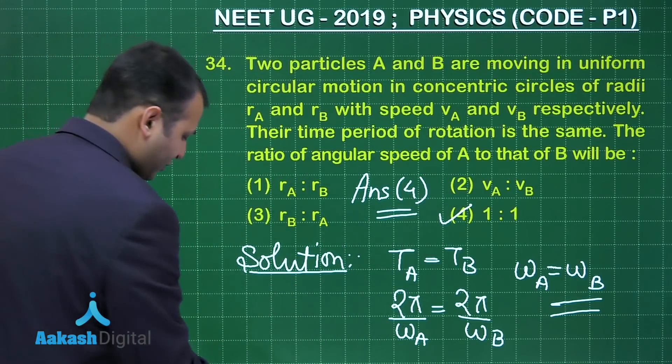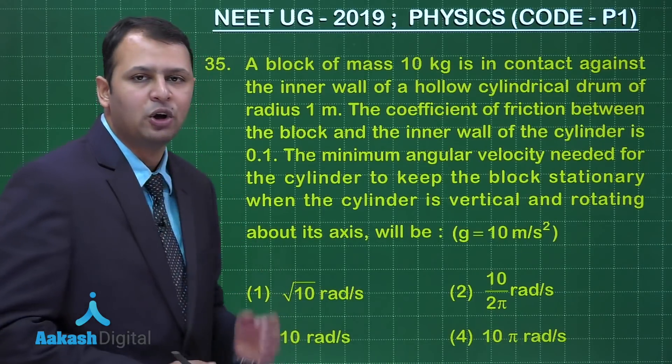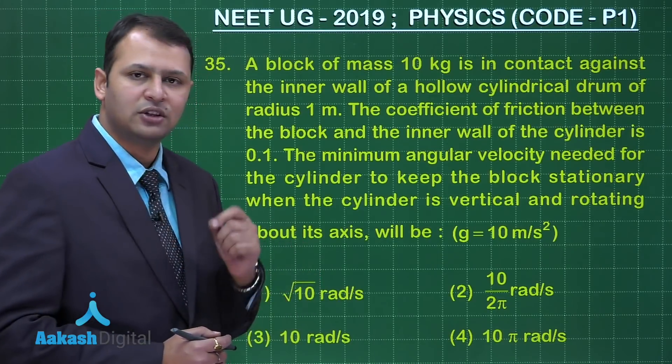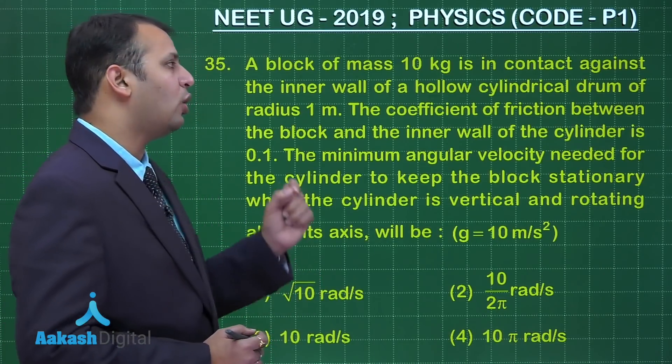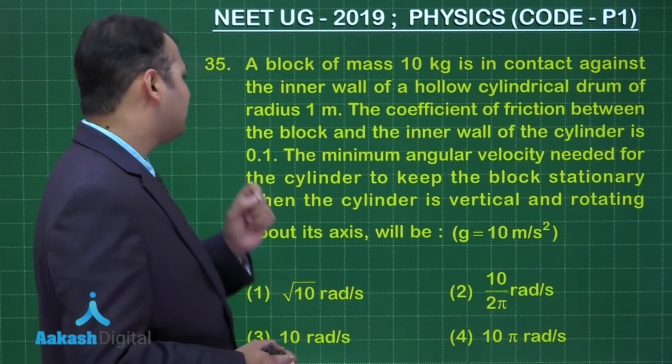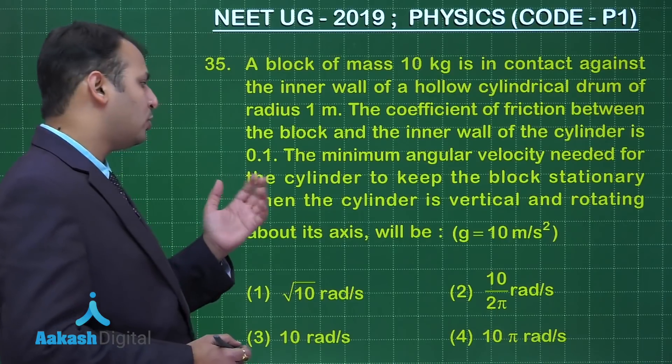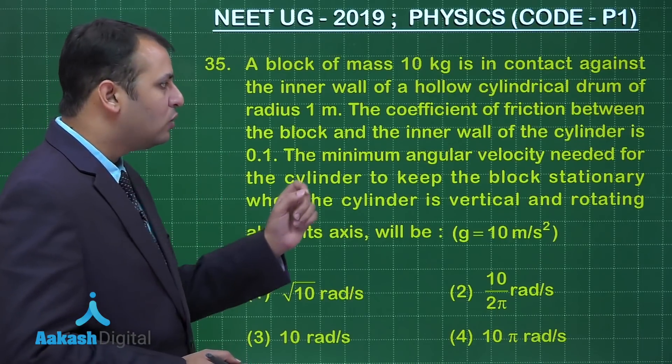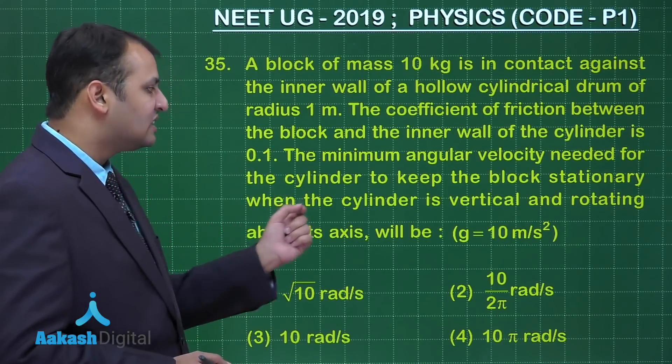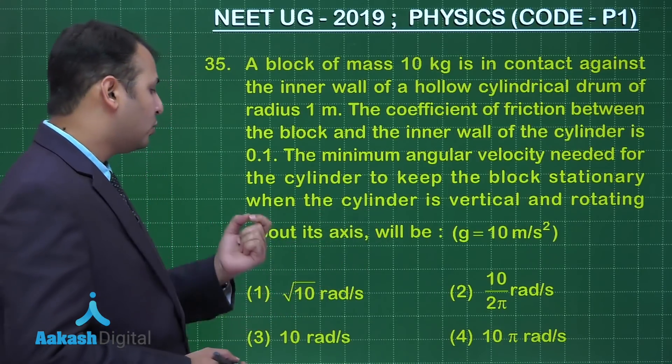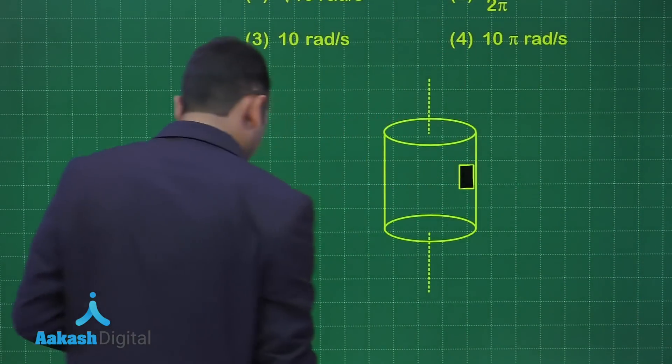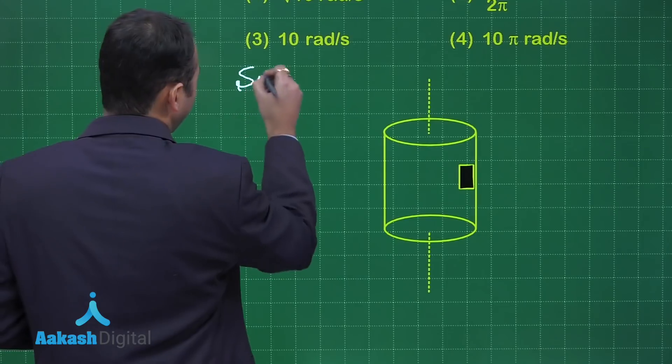Now let's move on to our next question, that is question number 35. The question belongs to chapter laws of motion. As per the question, a block of mass 10 kg is in contact against the inner wall of a hollow cylindrical drum of radius 1 meter. The coefficient of friction between the block and the inner wall of the cylinder is 0.1. The minimum angular velocity needed for the cylinder to keep the block stationary when the cylinder is vertical and rotating about its axis. In order to solve this we should know the diagram first, I have already made one for you.